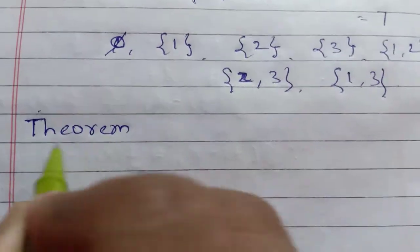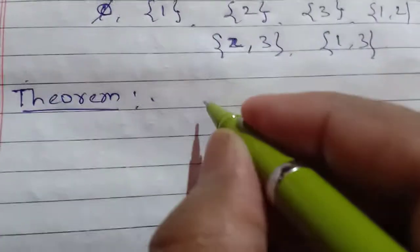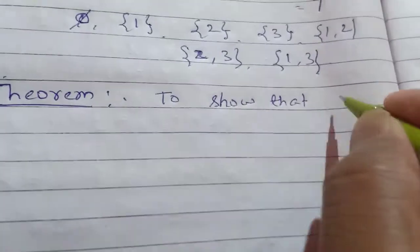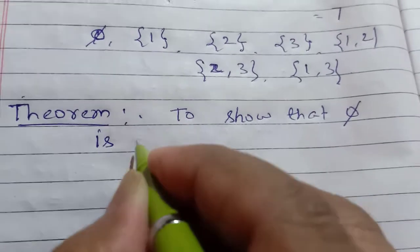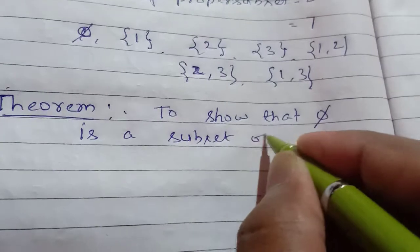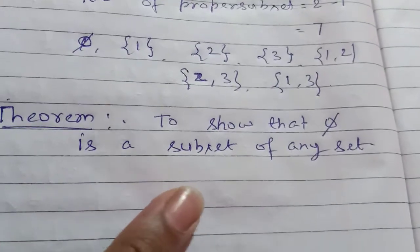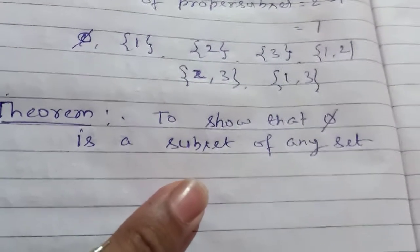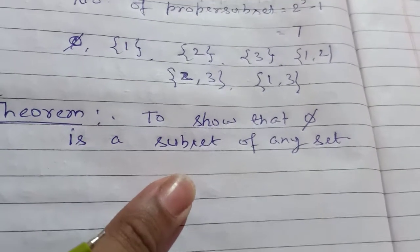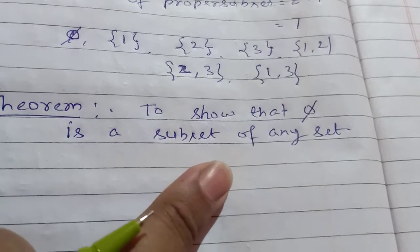Here we have to prove the theorem: how to show that phi is a subset of any set. To show that phi is a subset of any set — phi kisi bhi set ka subset hota hai — how will we prove this? First of all, we have to recall the definition of a subset.